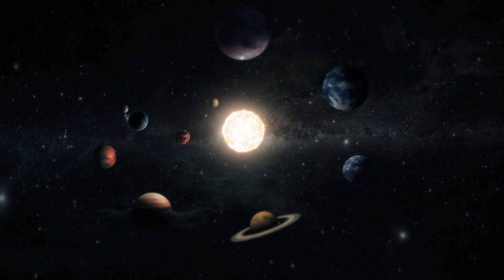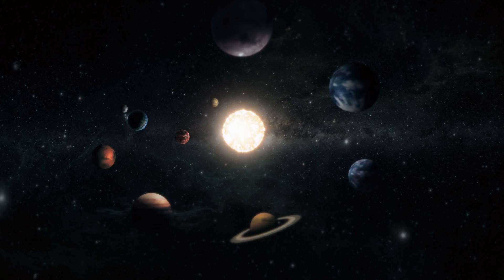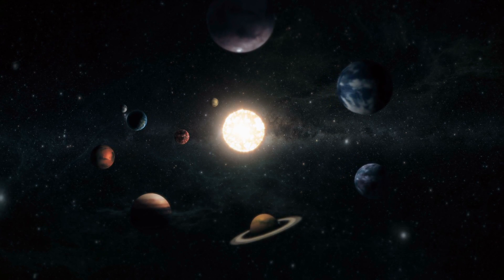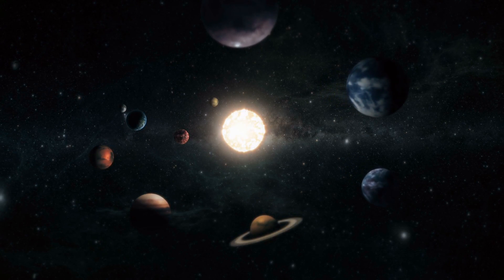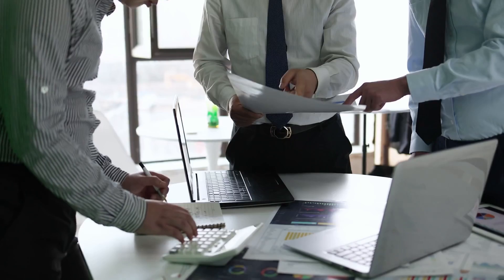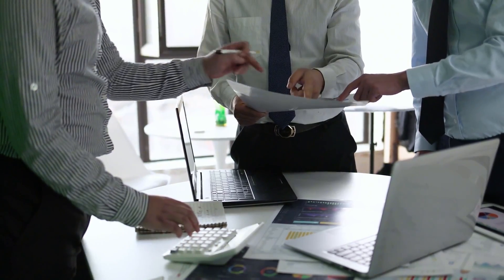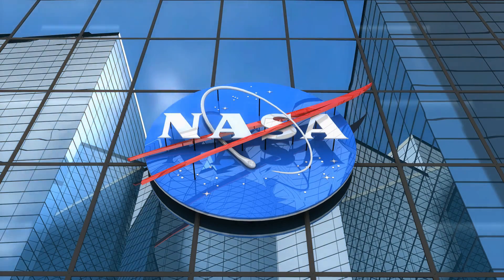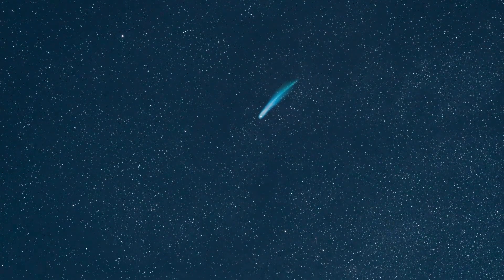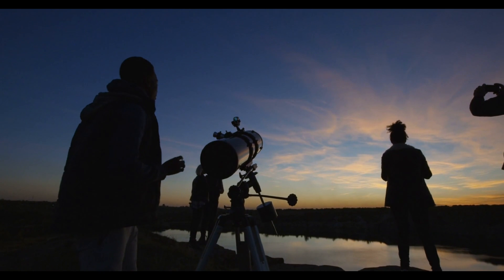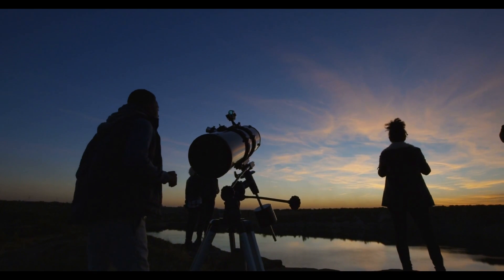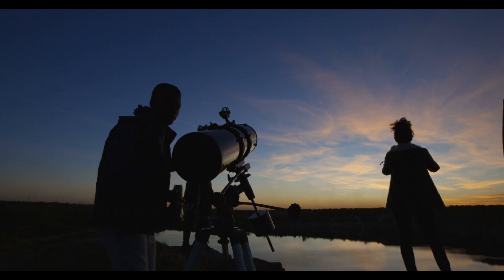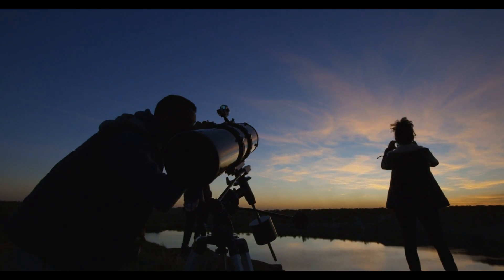Its course would carry it near several major worlds in sequence—Mars in October, Jupiter by December, and perhaps within range of Saturn's telescope soon after. Statistically, that alignment was extraordinary. A few independent analysts calculated the odds of such a path occurring by chance as vanishingly small, though others cautioned that selective sampling and observational bias could make rare coincidences seem meaningful.